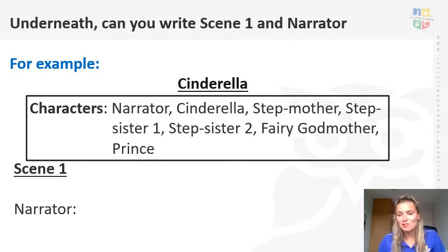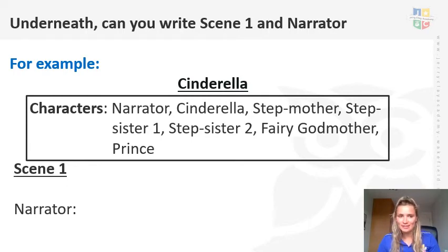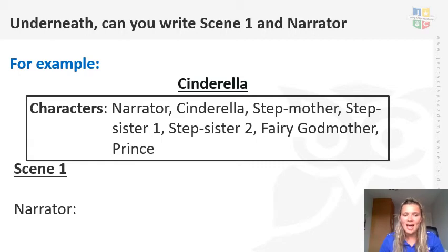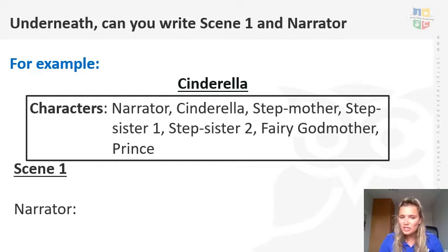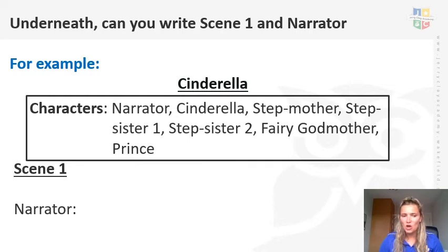So now what I'd like you to do is write the name of the story you're going to be doing — for example, mine is Cinderella — in the middle of the line and underline it so we can see where it is. Then, once you have done that, write the box with your characters in, just like we've done on the previous slide. Then can you write Scene One? Just underneath, underline it so it's really clear that is the first scene. You could also put in brackets where the scene is, but you don't necessarily always have to. Then I'd like you to leave a line and write the word Narrator with a colon, just as I have done there. Once you've done that, stop and come back to me.